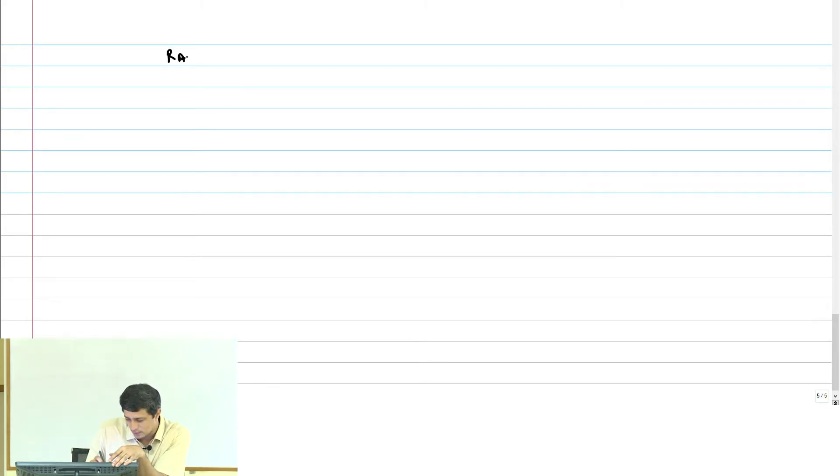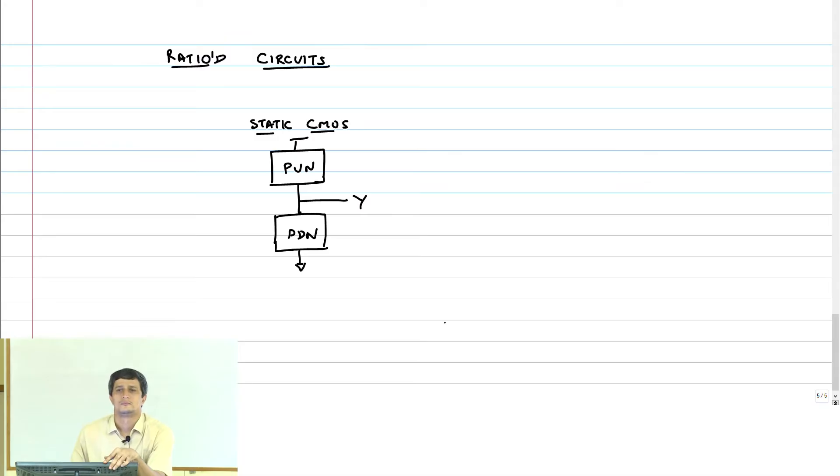This brings us to the idea of ratioed circuits. This static CMOS implementation is like this: pull up network, pull down network. The idea in a ratioed circuit is also called a pseudo NMOS logic.